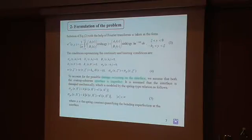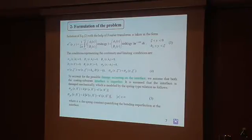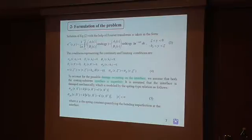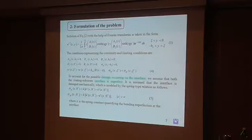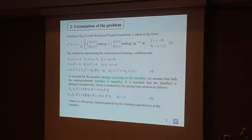The conditions representing continuity and limiting conditions include: the first three are the traction-free, displacement-free, and magnetic-free conditions on the layer. The last is the dislocation condition — multi-valuedness of displacement and continuity of stress — presented in equation 4. To account for possible damage at the interface, the coating-substrate interface is assumed imperfect and mechanically damaged, modeled by a spring-layer model in equation 4. The spring constant quantifies the bonding imperfection, allowing us to model imperfect coating-substrate structures with cracks.